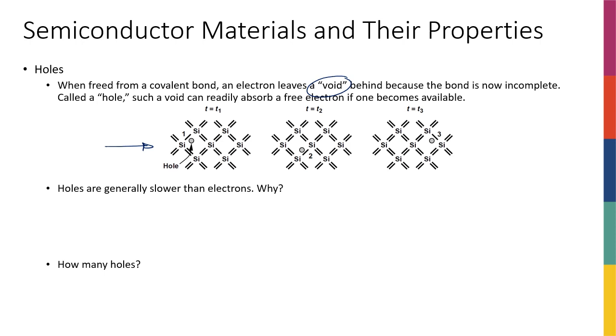This void is a free space for an electron to come in so that the valence shell of this silicon atom can be completed. So we call those voids holes.